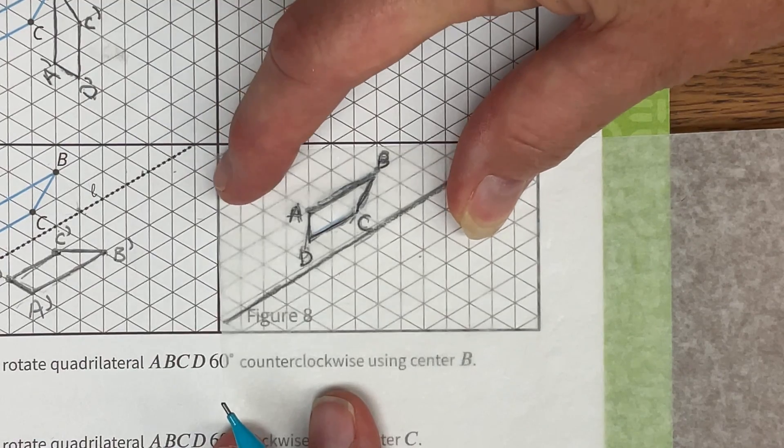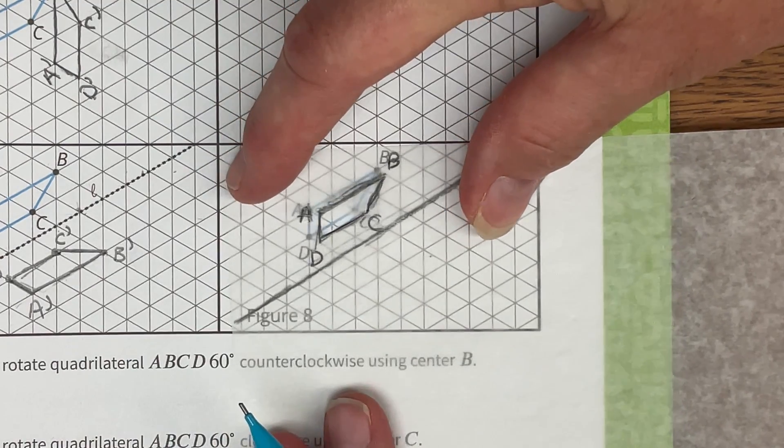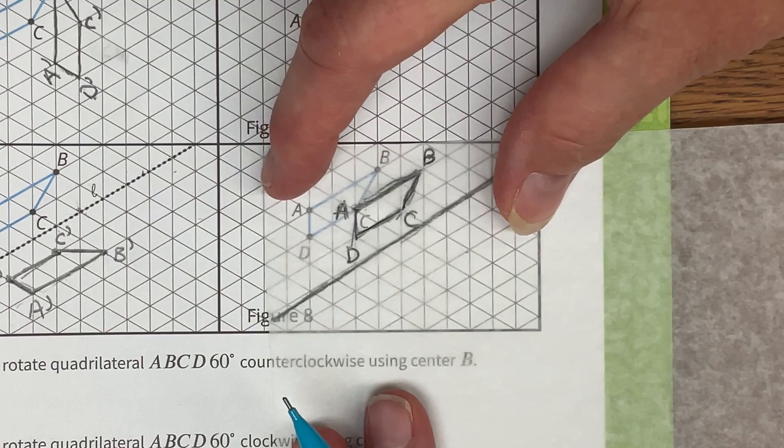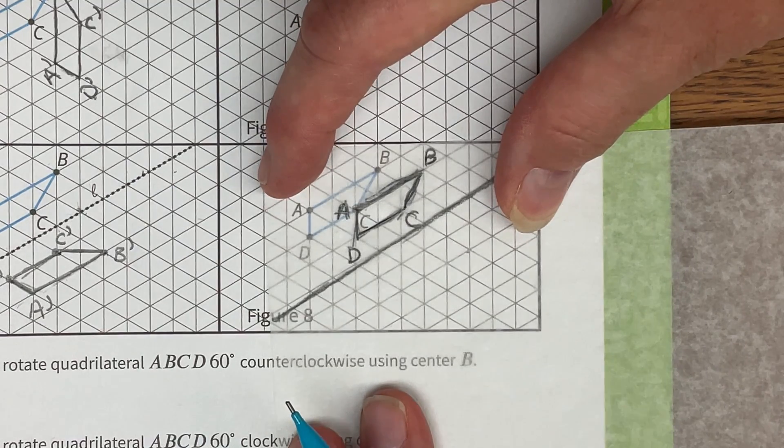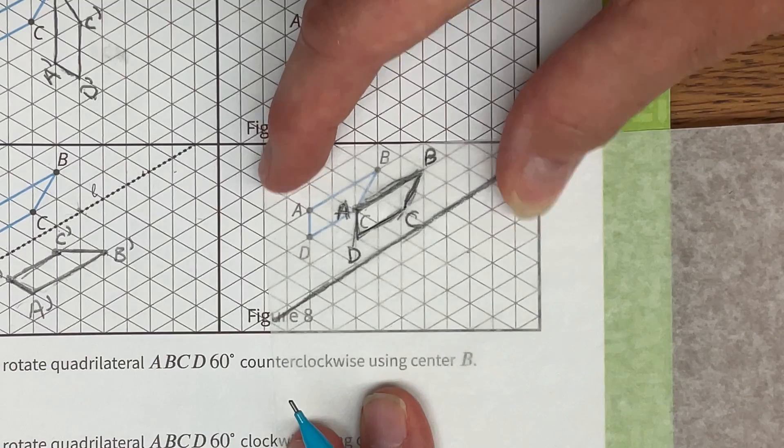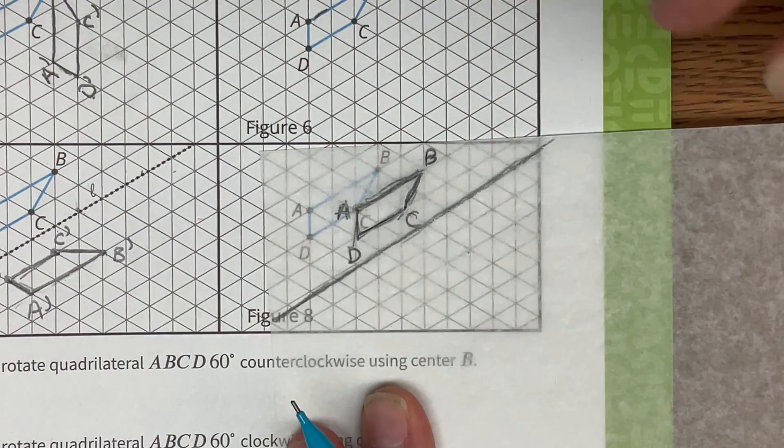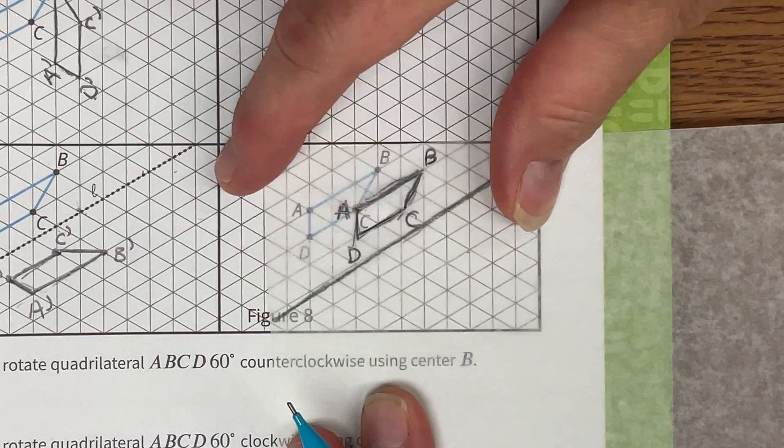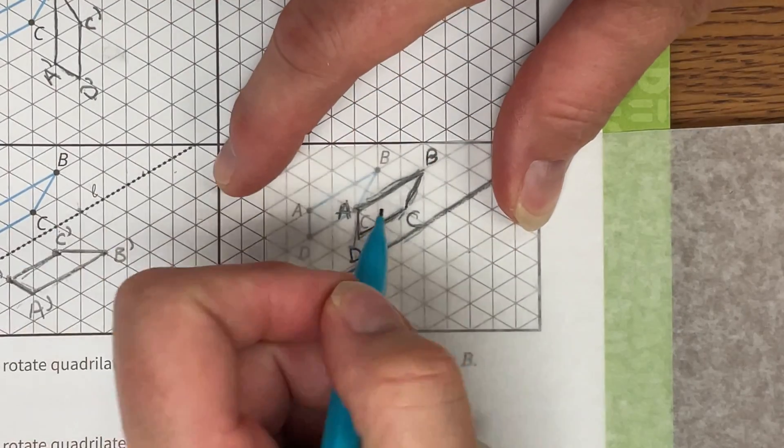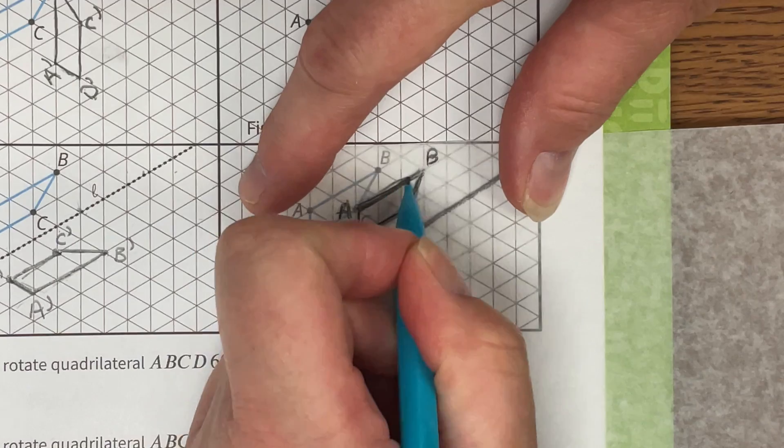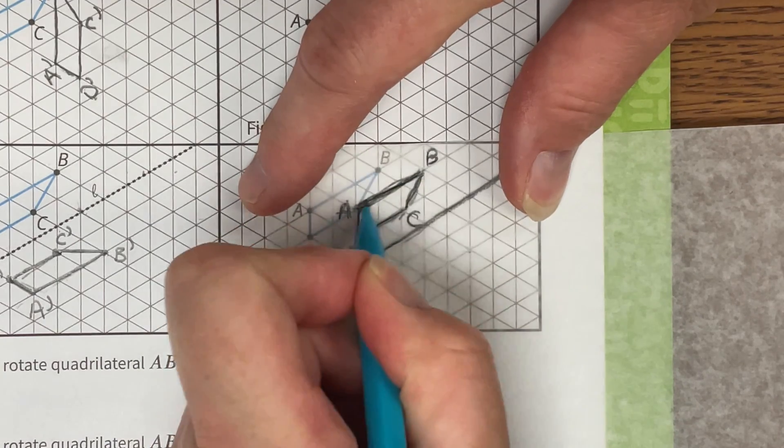And so a translation is just a slide. And that means I am just sliding point A over. Now it does kind of seem like a simple move but once you throw in the isometric grid and these triangles it kind of throws off what we're looking at. And so that's why sometimes the patty paper really can be helpful even for this type of movement.